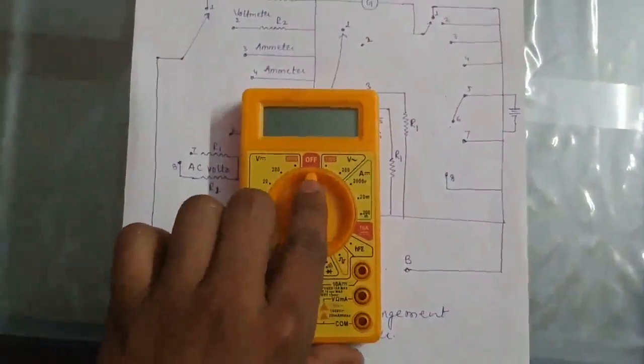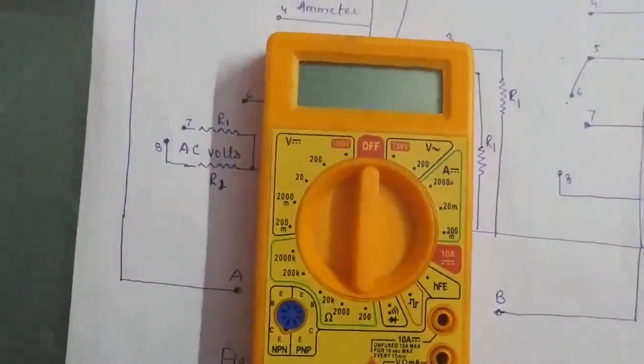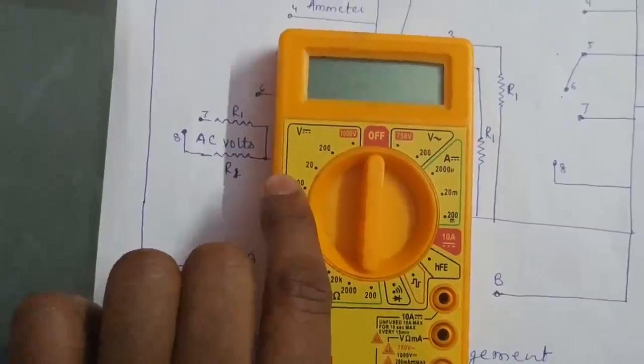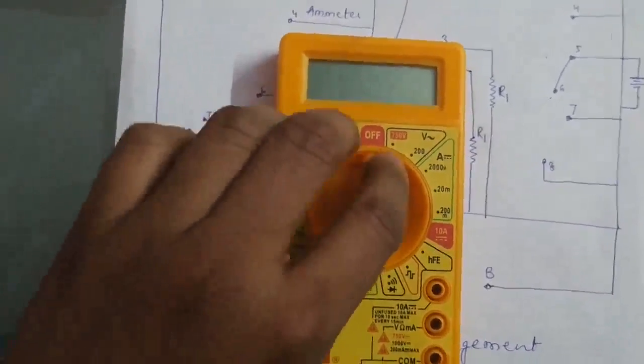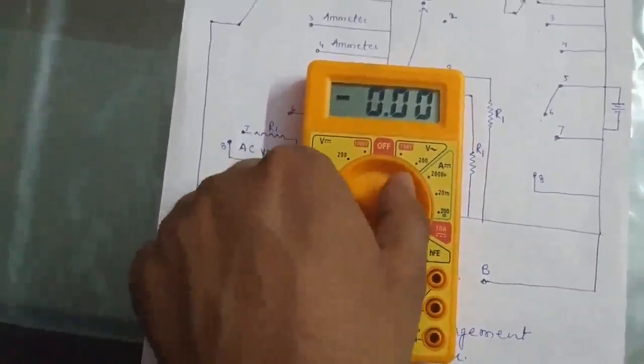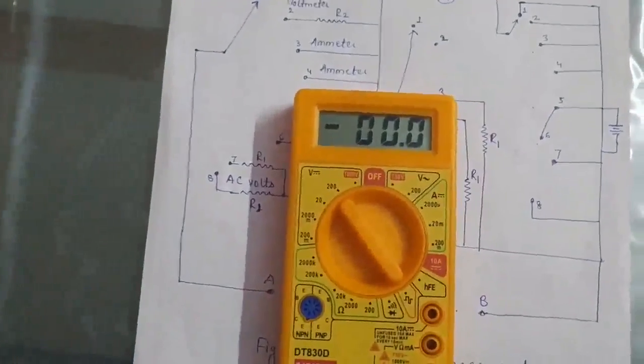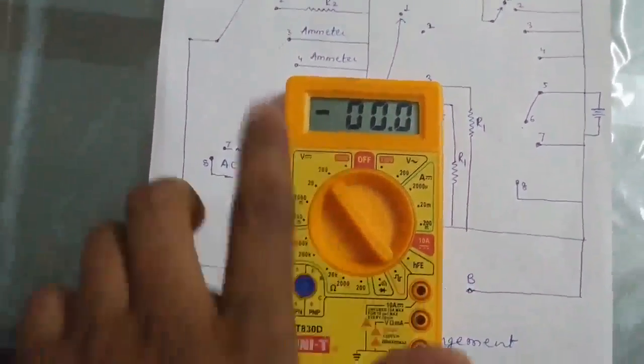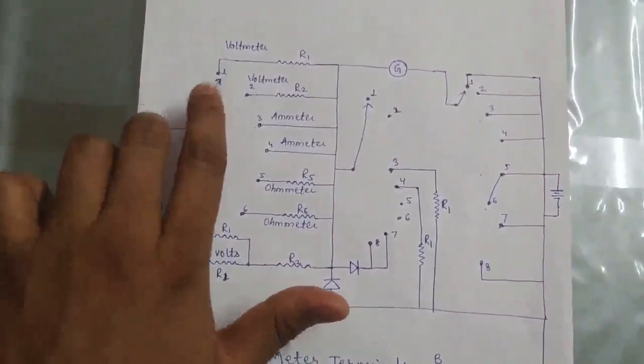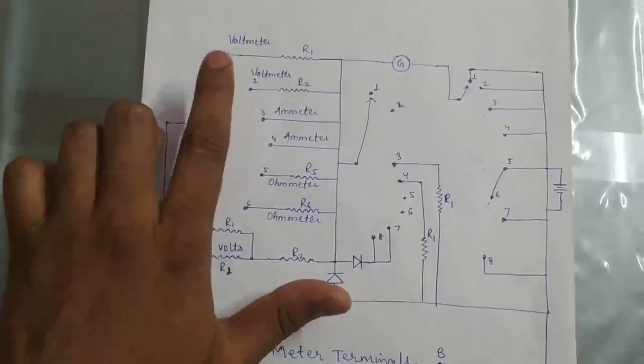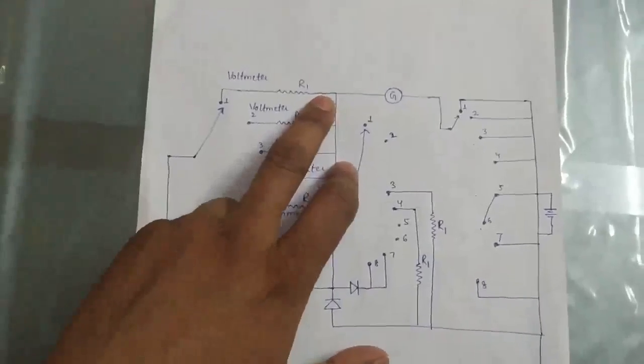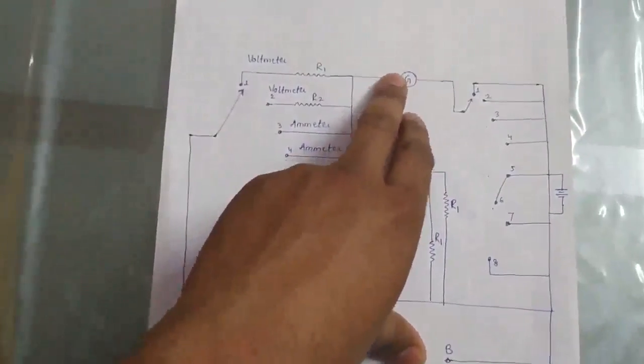This is the multimeter. Here we see the range of AC voltage, and this is for DC voltage measurement. Now first we select the range for DC voltage measurement - 200 volts DC. Similarly, we see in the diagram, first we connect the voltmeter. Using the rotator switch, we select DC, these functions open, and this one closes.